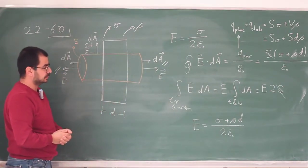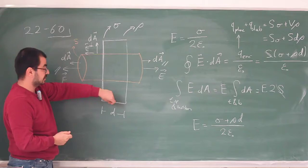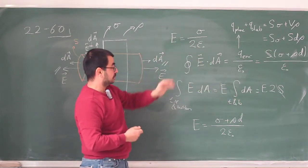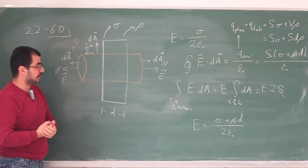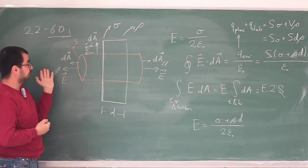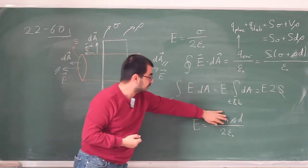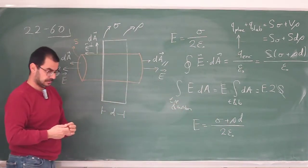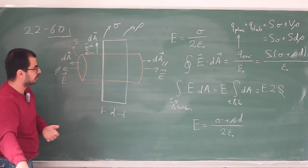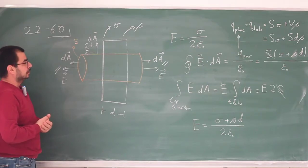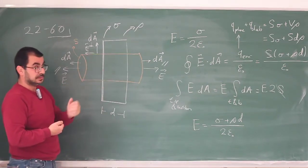This checks out: if the slab thickness goes to zero, we recover the original formula for just a plane of charge. So that part is verified. This covers parts A and B — finding the electric field outside. Now for part C, they are asking for the electric field inside the slab.